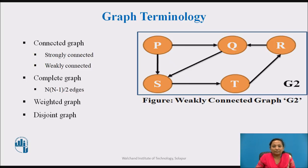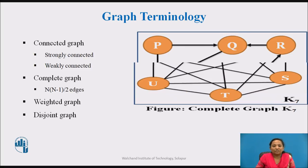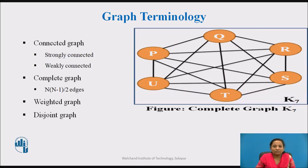Complete graph: A complete graph has an edge between every pair of vertices, that is there is a path from one node to every other node in the graph. As shown here, this is an example of a complete graph where the number of nodes is seven, and each node is connected to every other node.